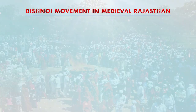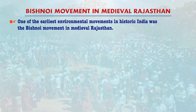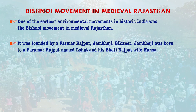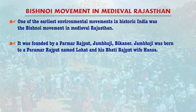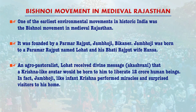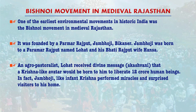One of the earliest environmental movements in historic India was the Bishnoi movement in medieval Rajasthan. It was founded by Parmar Rajput Jambhoji in Bikaner. Jambhoji was born to a Parmar Rajput named Lohat and his Bhati Rajput wife Hansa. The agro-pastoralist Lohat received divine message — Akashvani — that a Krishna-like avatar would be born to him to liberate 12 crore human beings. Indeed, the infant Jambhoji, like infant Krishna, performed miracles and surprised visitors to his home.